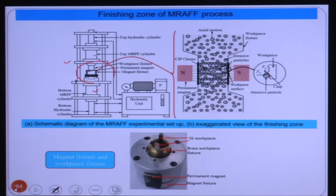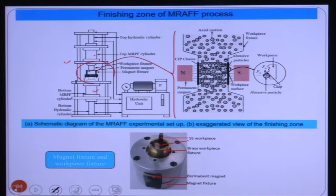The finishing zone is where we keep our workpieces for polishing. On that zone where we want the polishing, we apply magnetic field. You can see two poles of the electromagnet — north pole and south pole. For the current analysis, we are not considering any electromagnet; we are considering only a permanent magnet.